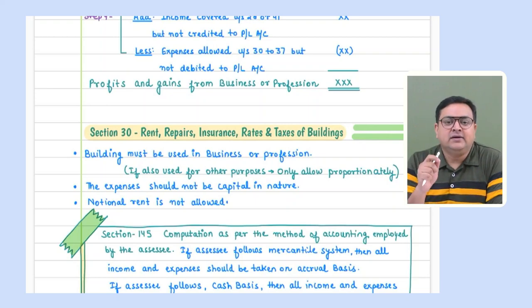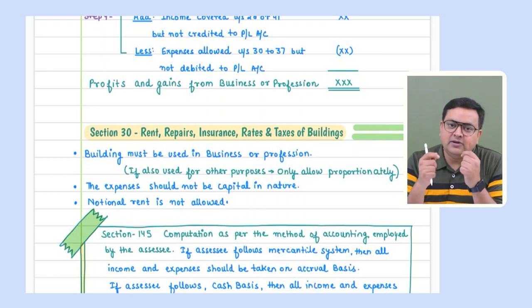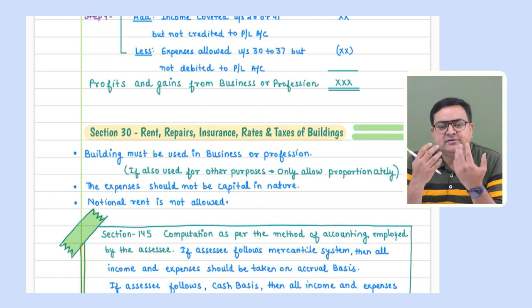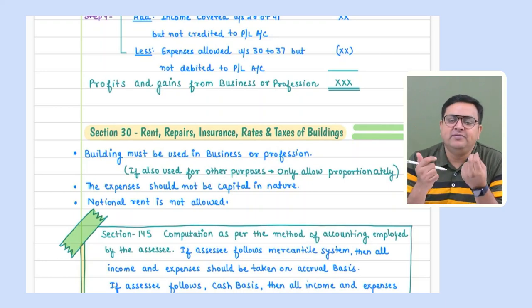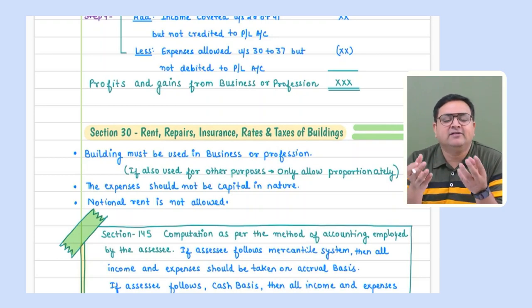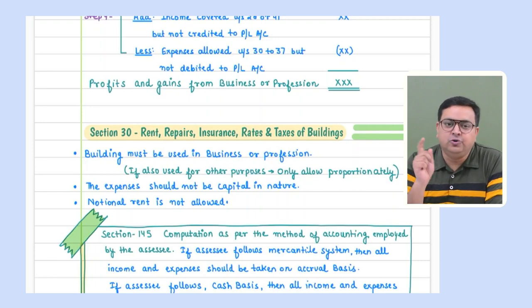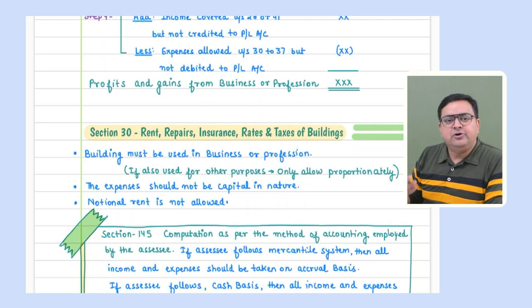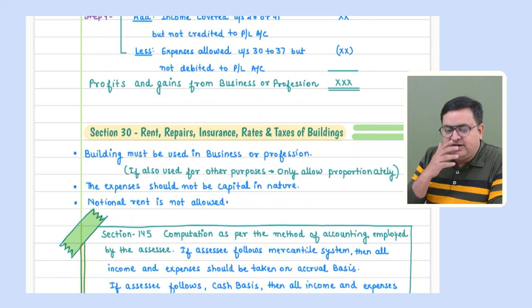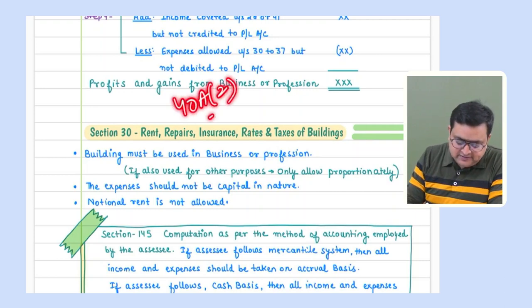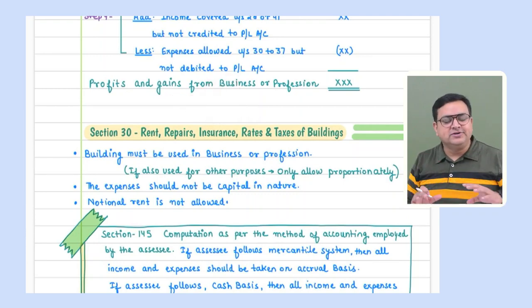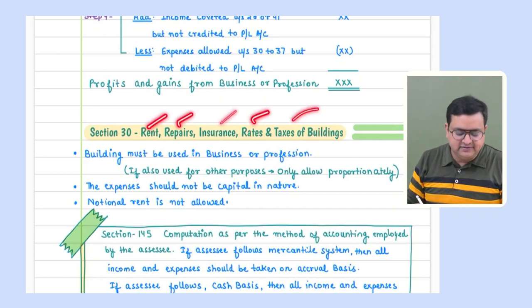Important: notional rent is not allowed. Only actual rent paid is allowed. If you are the owner of the building and calculate an opportunity cost of hypothetical rental income, that notional rent cannot be deducted. If you pay rent to a relative, that is allowed if it is at fair market value. But paying rent to yourself is notional rent and is not allowed.